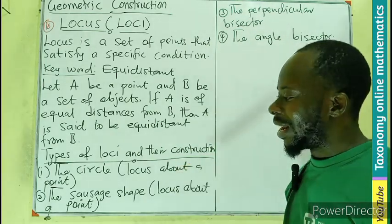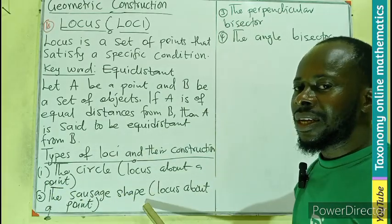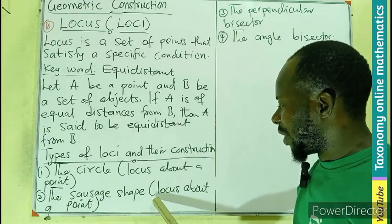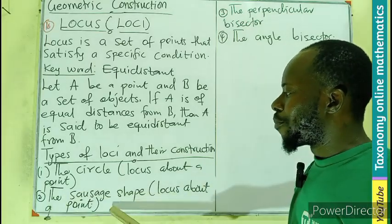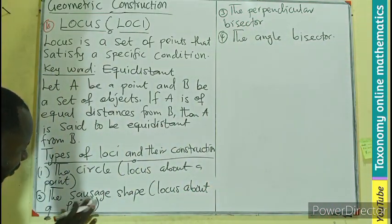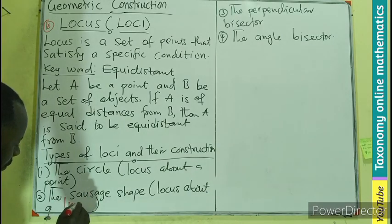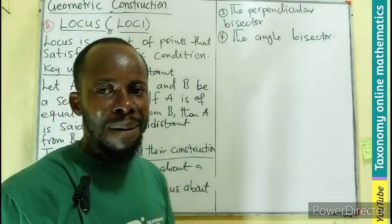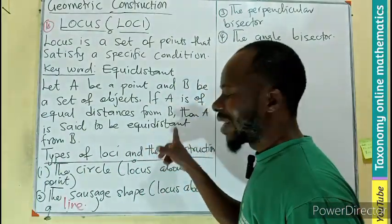We will discuss that in the next episode. Then the sausage shape, which is the locus about a line, not about a point. So locus about a line. About a point, it gives us a circle.